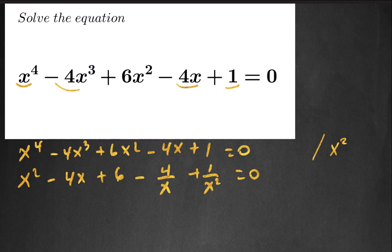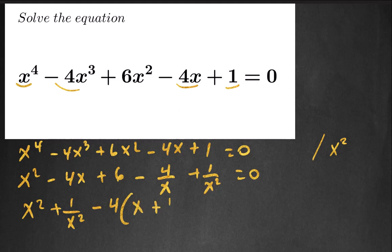So I get x squared plus 1 over x squared, minus 4 factoring x plus 1 over x, and then plus 6 is equal to 0.